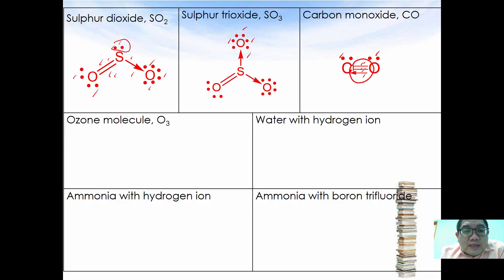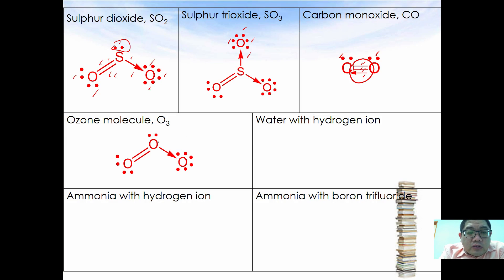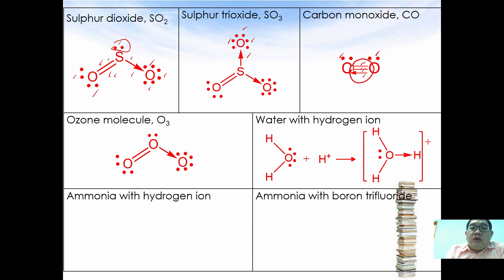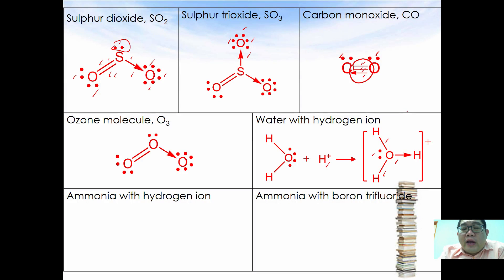Another example is the ozone molecule, which is very similar to sulfur dioxide — it also donates an electron pair to oxygen to ensure all oxygen atoms have eight electrons. Similarly, when hydrogen ion exists in water, one of the lone pair electrons from oxygen is donated to the hydrogen ion, forming H3O+ where oxygen achieves two, four, six, eight and hydrogen achieves a duplet arrangement.